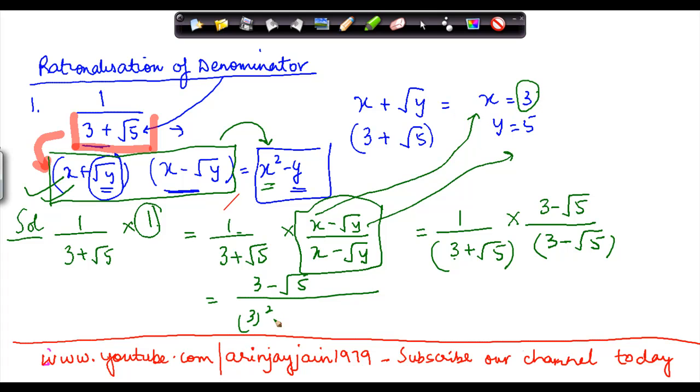So 3 square minus y. y is 5, or 3 minus under root 5 divided by 9 minus 5. This gives me 3 minus under root 5 divided by 4.